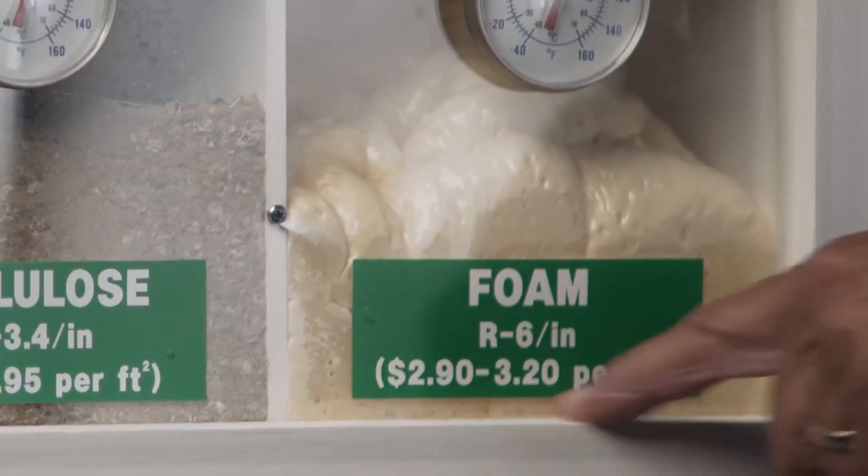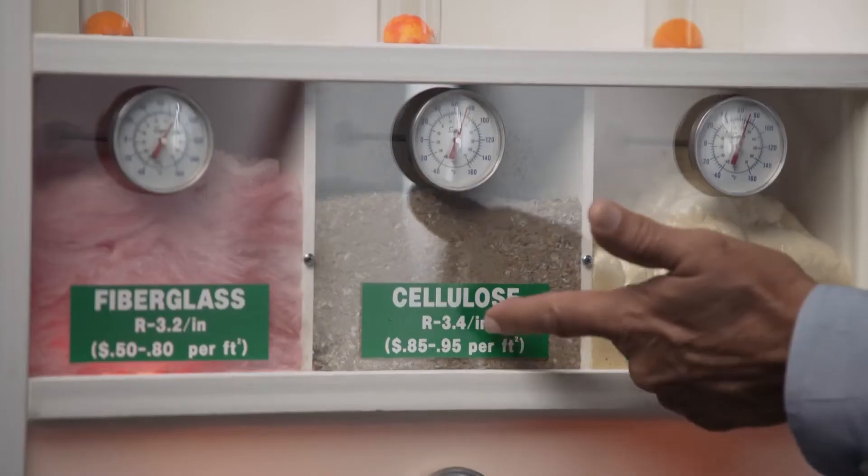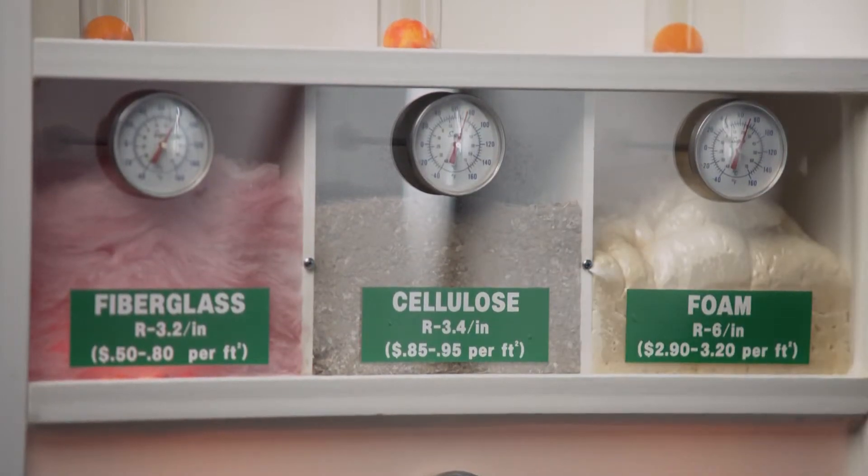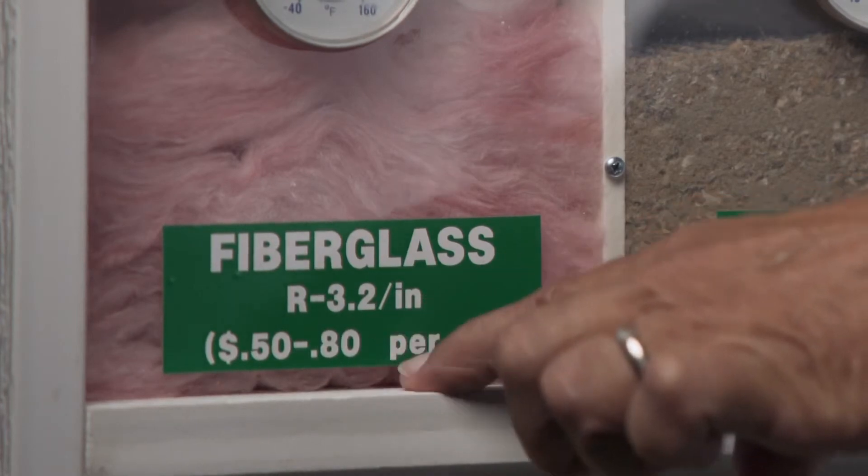From a cost standpoint, foam is the most expensive at $2.90 to $3.20 per square foot. Cellulose is next at 85 to 95 cents, then fiberglass at 50 to 80 cents.